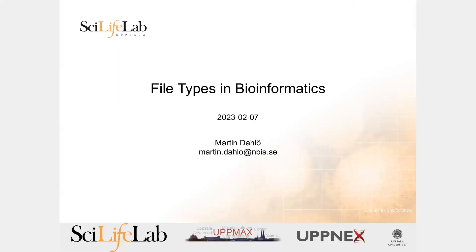Today we're going to be looking at different file types in bioinformatics. As you might have seen yesterday, there are many different file types, and you use different programs to open different kinds of files. We're going to take a look at the more common ones you'll encounter when you do bioinformatics and analysis, just to make sure you get a feeling for when in a pipeline you should see different files. The raw data is only at the beginning of the pipeline — you refine your data more and more, and at the end you have something like a CSV file of SNPs. You don't bring back your sequencing data for the final steps, usually.